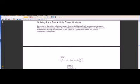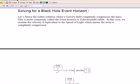It's pretty straightforward. What you need to do is assign the gravitational potential to the kinetic energy potential. So we are going to derive a radius solution where a gravity field completely compresses the mass. It's commonly called the event horizon or the Schwarzschild radius.